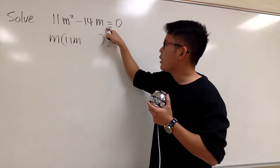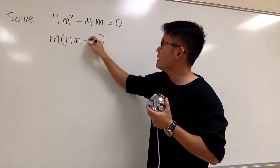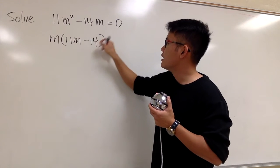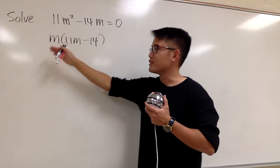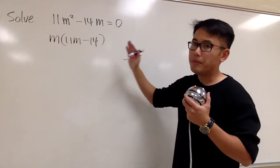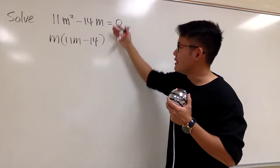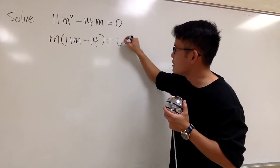And then for the second part here, bring down the minus, the 14 also stays, but this m, we factored it out already. So, this is what we have. And be sure you remember, this is an equation, equals to 0.